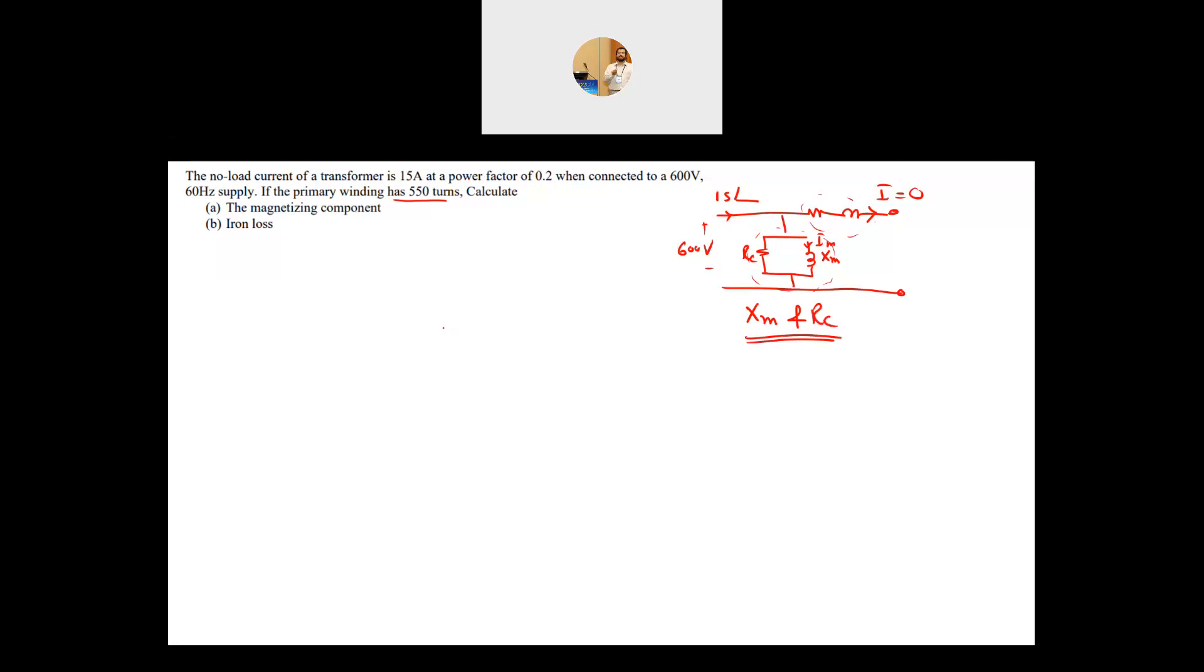We need to know how to use this information so that we can solve that question. We have the power factor equal to 0.2. Obviously this is a lagging power factor because this is an inductive load. So from this you can find theta which is cosine inverse of 0.2 which is equal to 78.46 degrees.